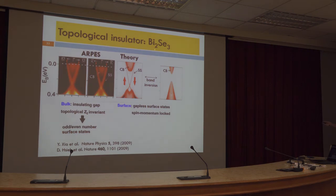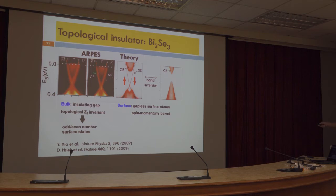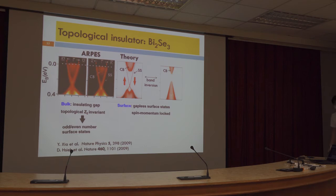This is a typical example — bismuth selenide. ARPES work from Hasan's group. In ARPES we see there are two linear lines here, and there is an electron pocket crossing the Fermi level. This is our simulation. Comparing theory and ARPES, we can easily recognize that these two linear lines are a topological surface state, and this electron pocket is a bulk conduction band. If we artificially remove the band inversion and change the bulk topology, you can see the surface state disappears.